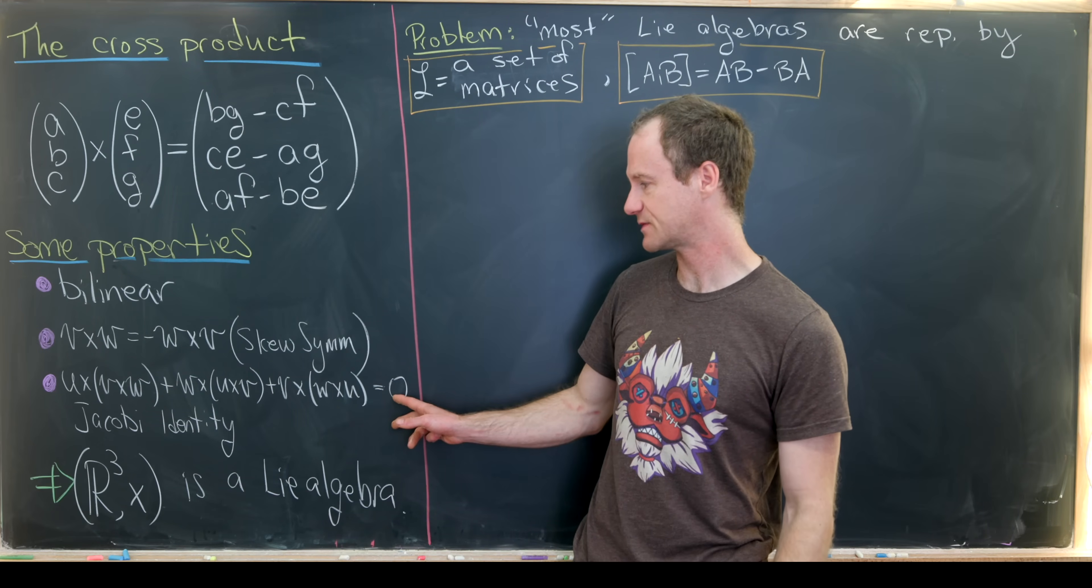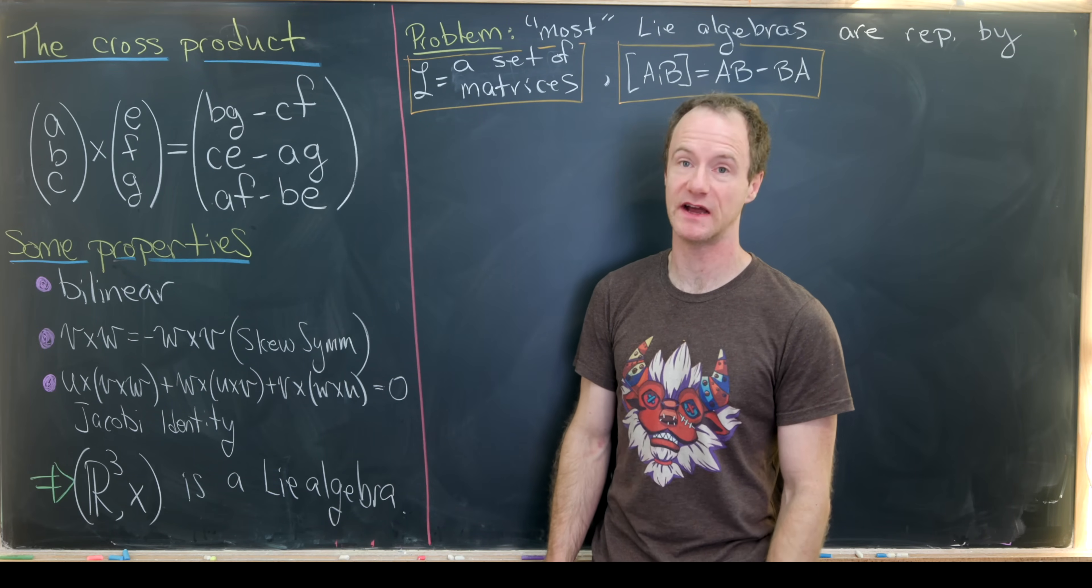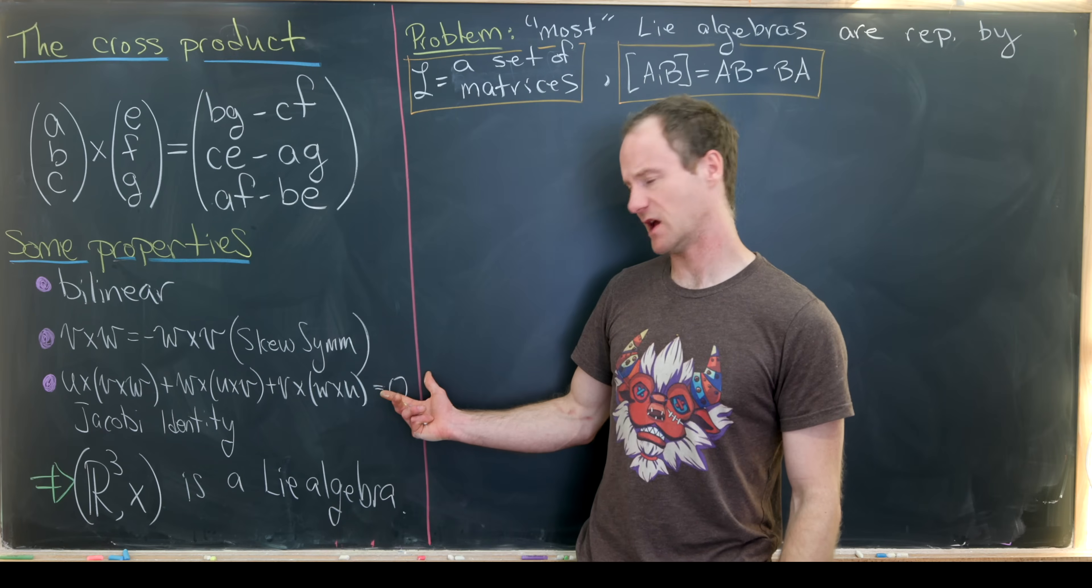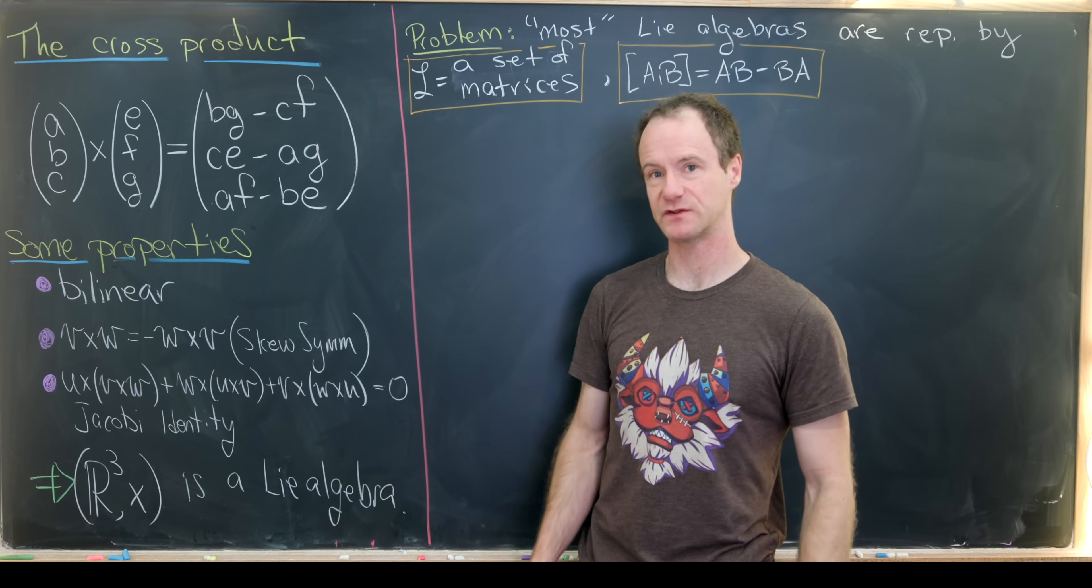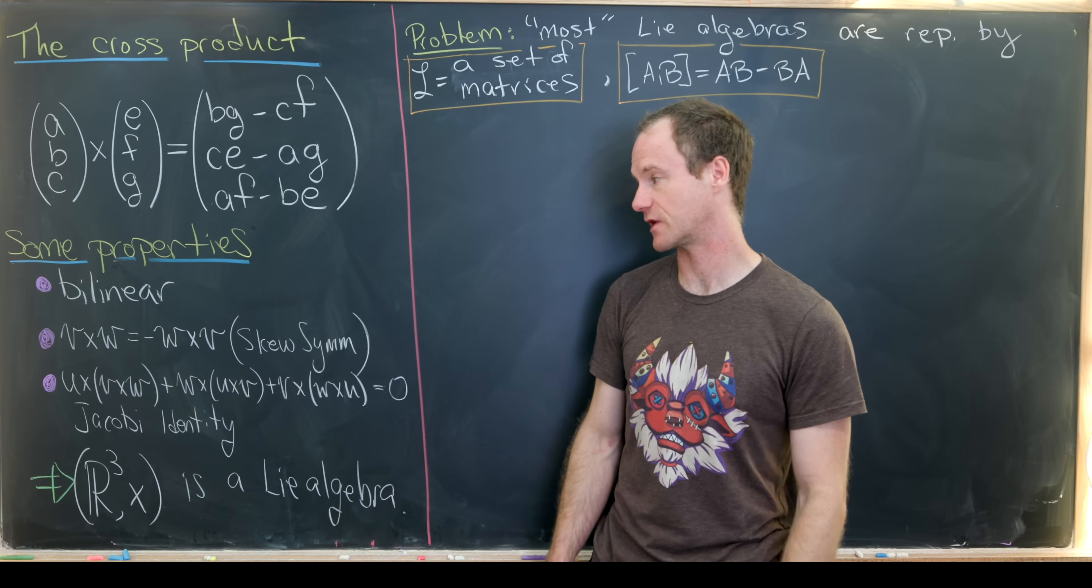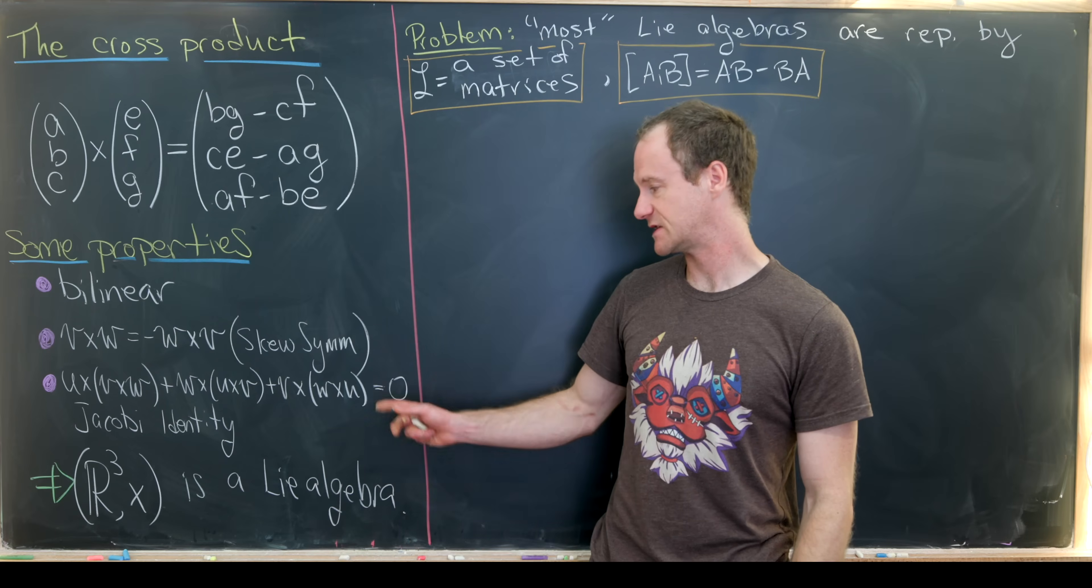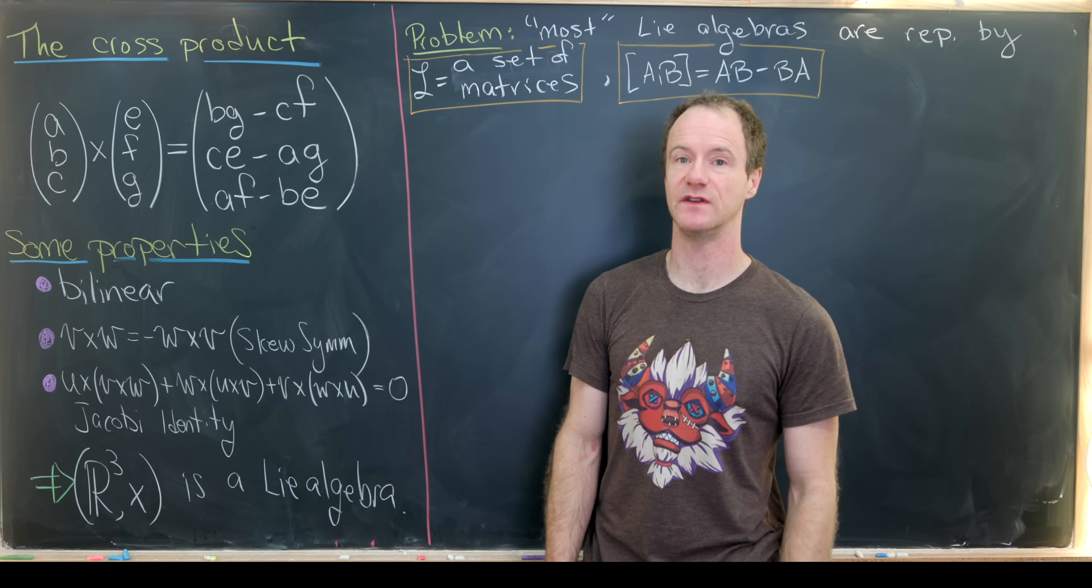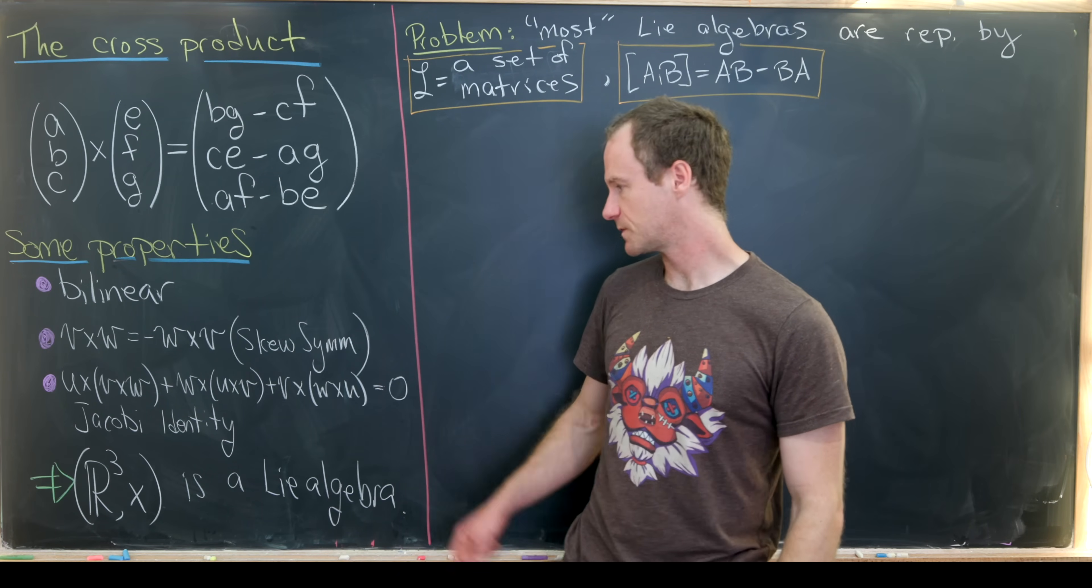And then finally, we've got this nice property which is called the Jacobi identity. And this is often an exercise in one of those classes and not really presented during the class. And that has to do with the non-associativity of the cross product.